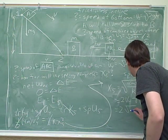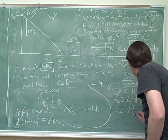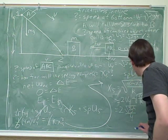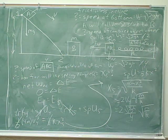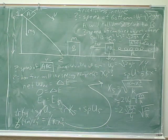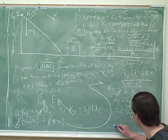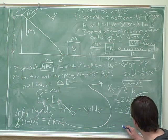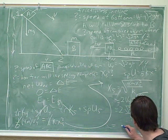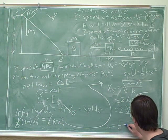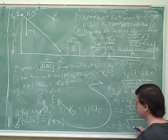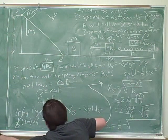And then we can plug in the v sub 4. And we get root 2 gh over 4 times squared over m over k. Does that look right?